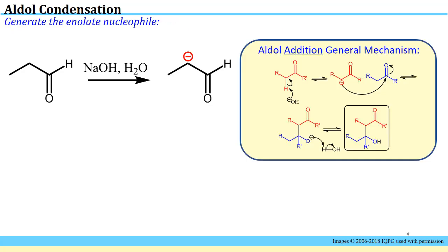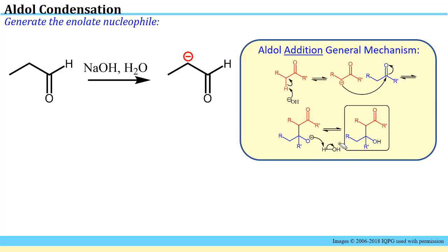The aldol addition is a specific case of this, where you first have to make your nucleophile — a nucleophile shown in red. That enolate nucleophile does the nucleophilic addition mentioned previously, and then once you've pushed the minus charge onto that oxygen, you will get a proton from water that's present in the reaction solution. So that's the general mechanism.